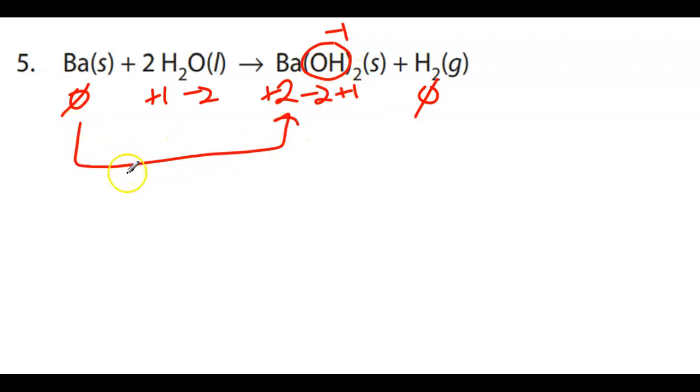barium is going from zero to plus two. So it is oxidizing. So barium is the reducing agent, right? And then hydrogen is going from plus one to zero.